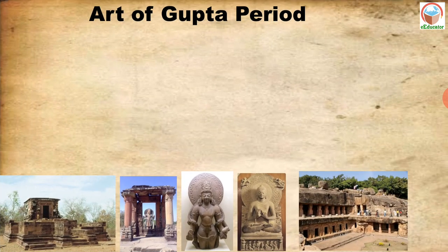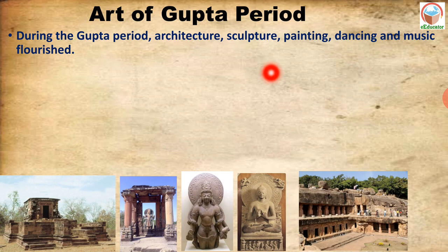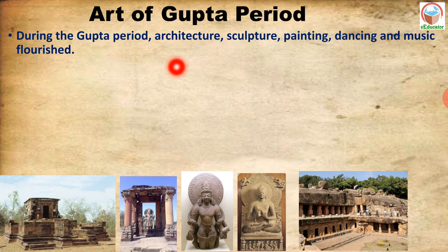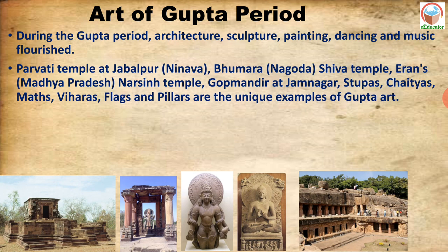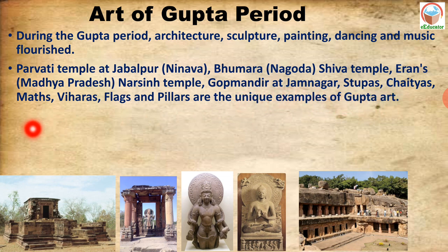Now, the art of the Gupta period. The Gupta period is known as the golden period of architecture. During the Gupta period, architecture, sculpture, painting, dancing and music all flourished. Some temples constructed during this time include the Parvati Temple at Jabalpur, Bhumara, Nagora, Shiva Temple at Eran in Madhya Pradesh, Narshi Temple, and Gopamandir at Jamnagar. Stupas, Chetiyas, Math, Viharas, flags and pillars are all unique examples of Gupta art.